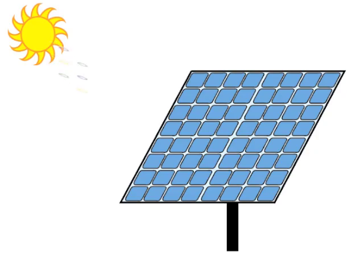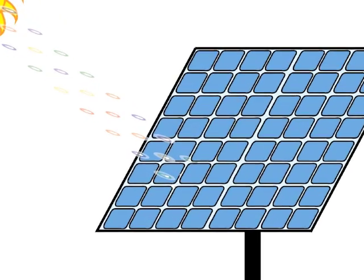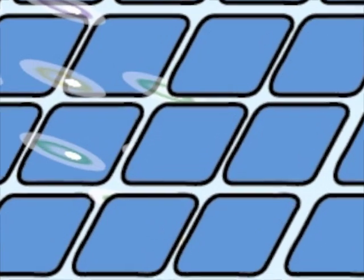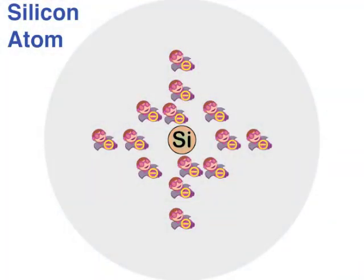When a photon hits a solar panel, what happens depends on the energy of the photon. Most solar panels are made of silicon and other elements. This is a silicon atom inside a solar panel.